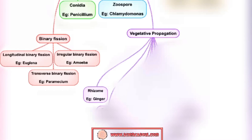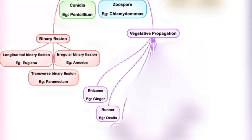Rhizomes are root-like stems that grow horizontally under the ground, and lateral buds grow out to form new rhizomes — for example, ginger. Next is runner (also called stolon): runners are modified stems that grow from existing stems, spreading along or below the soil surface.